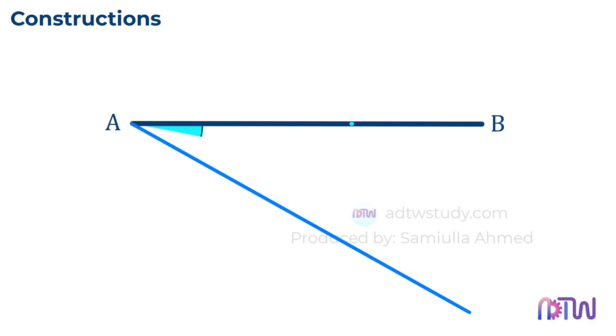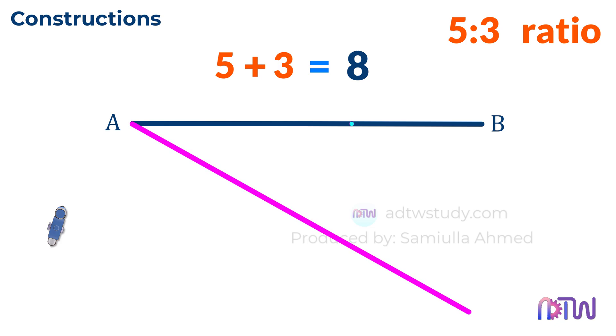An acute angle is an angle that is less than 90 degrees. Next, since we want to divide the line into a 5 to 3 ratio, we need to divide it into 8 equal parts. Why 8? Because 5 plus 3 equals 8. Now that we know the total number of parts, take a compass and adjust it to any length. The exact length of the compass is not important here. Use the compass to divide this angled line into 8 equal parts.